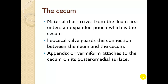The cecum. Material that arrives from the ileum first enters the expanded pouch, which is the cecum. The ileocecal valve guards the connection between the ileum, the small intestine, and the cecum, the first part of the large intestine. The appendix, or vermiform, attaches to the cecum on its posterior medial surface. This is where we would get appendicitis. The vermiform or appendix inflames up in that area, gets infected, and needs to be surgically removed if that's the case.